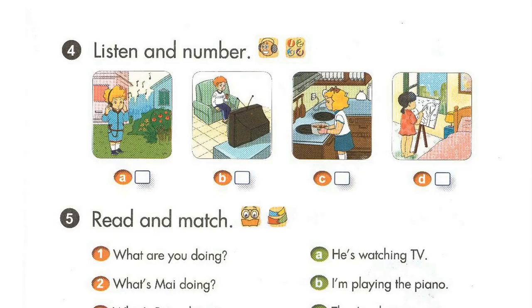Page 55. Lesson 2. Activity 4. Listen and number. 1. Where's Tony? He's in the living room. What's he doing? He's watching TV.